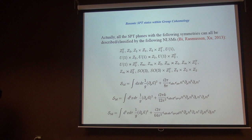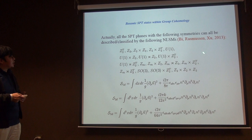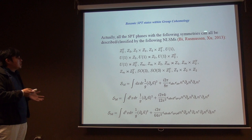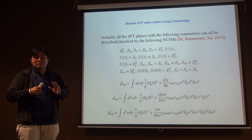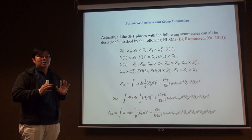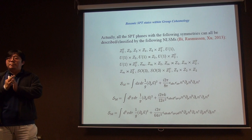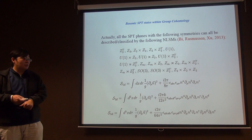The central claim: all 1+1D bosonic SPT phases with essentially any symmetry can be described by a single equation — the O(3) NLσM with a theta term. Similarly, all 2+1D bosonic SPT phases are described by one equation, and the 3D case by another. All 1+1D bosonic SPT phases are basically the same as the Haldane phase — just the same equation.